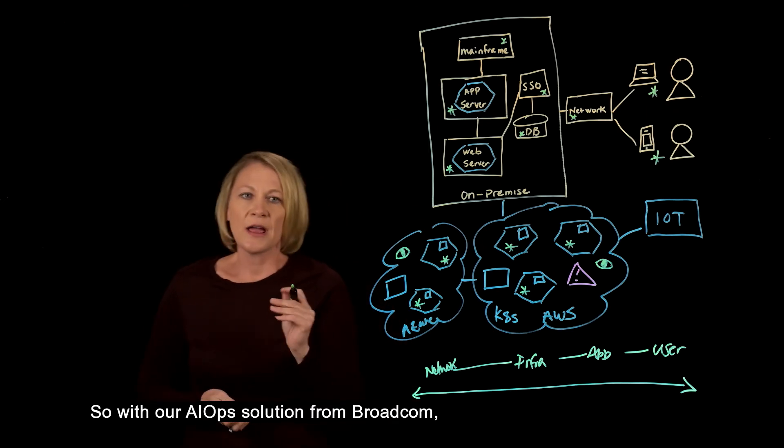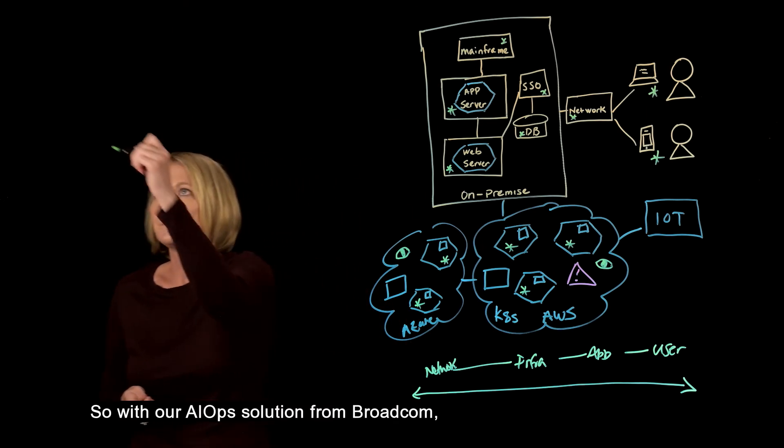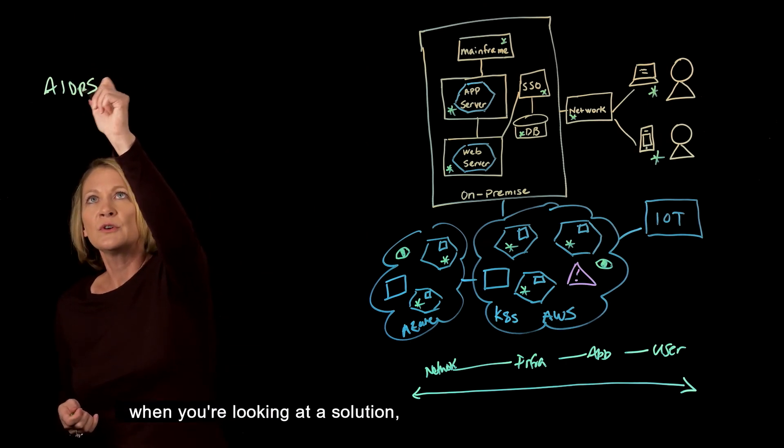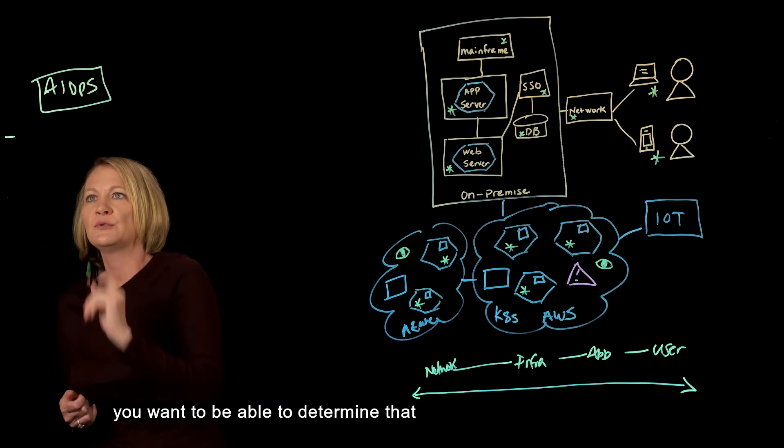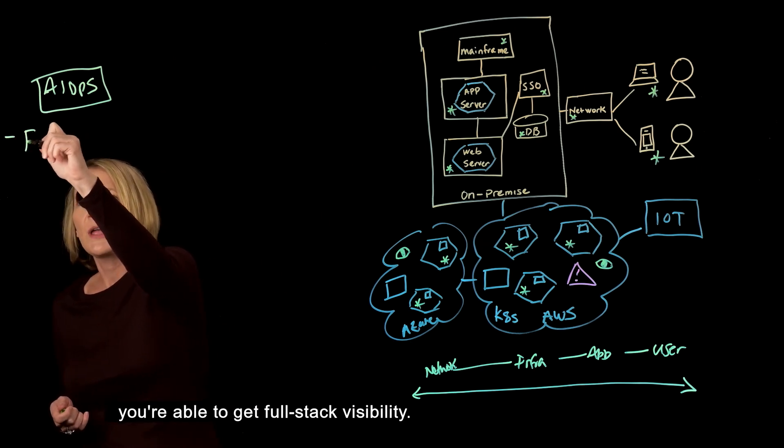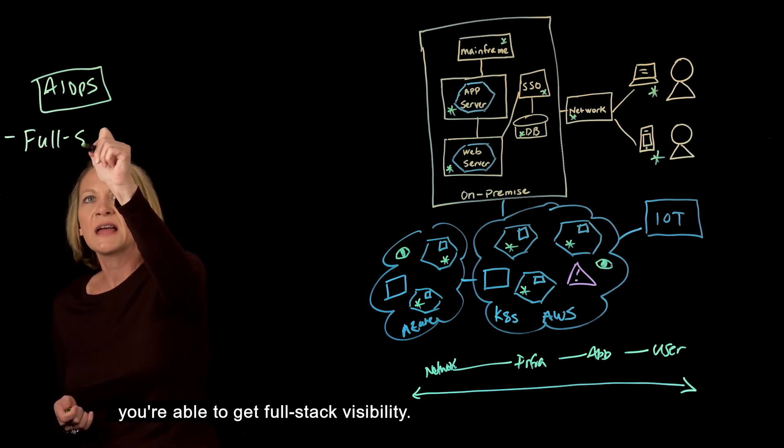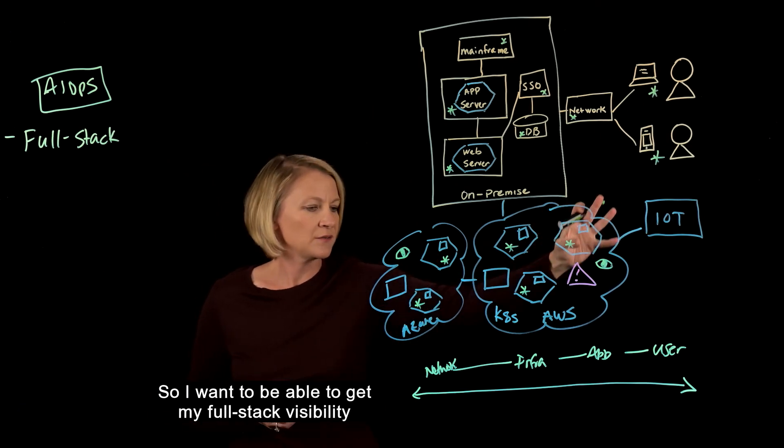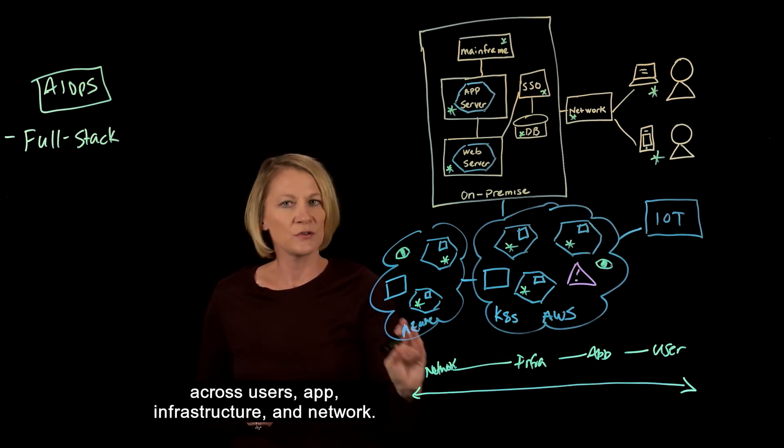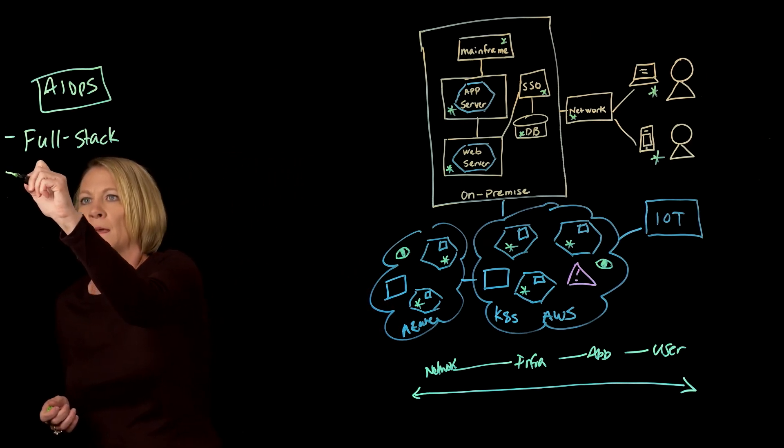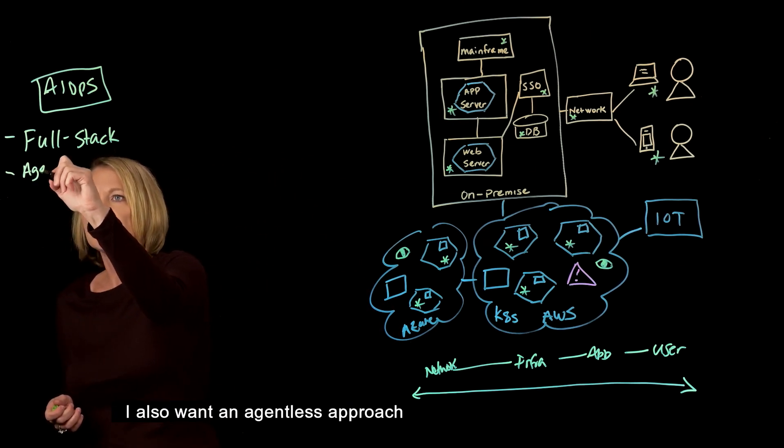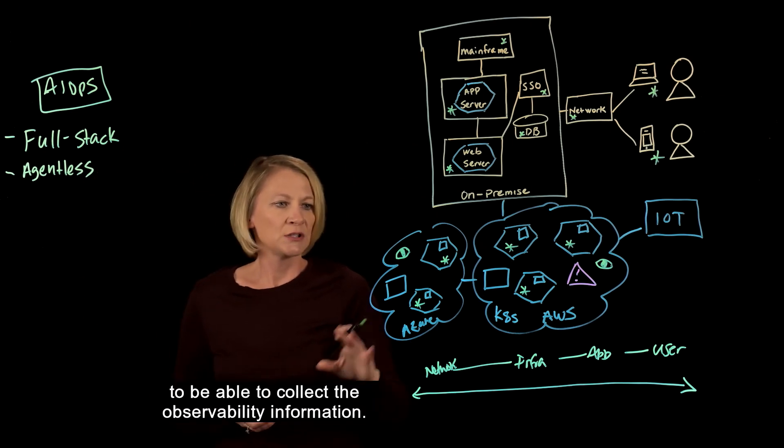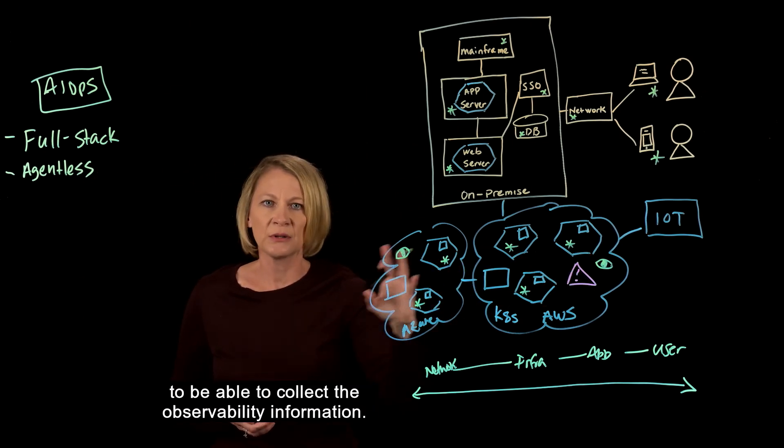So with our AIOps solution from Broadcom, when you're looking at a solution, you want to determine that you're able to get full stack visibility. I want to get my full stack visibility across users, app, infrastructure, and network. I also want an agentless approach to collect the observability information.